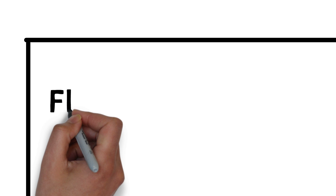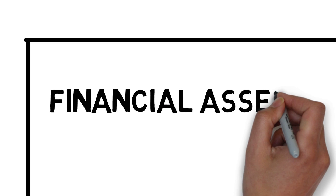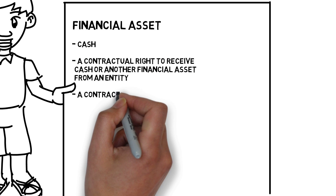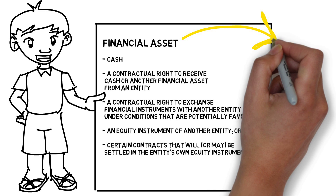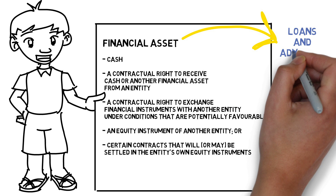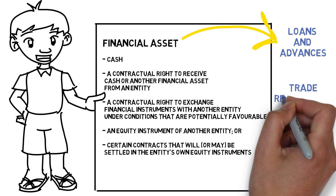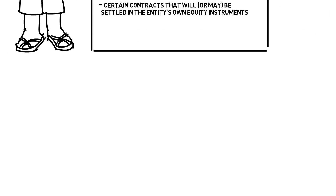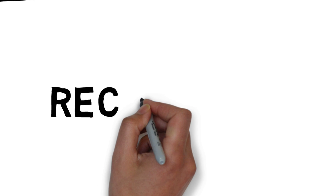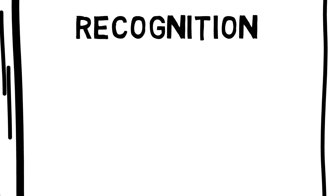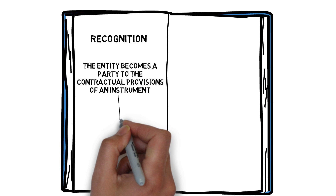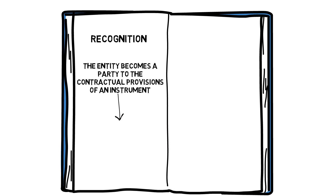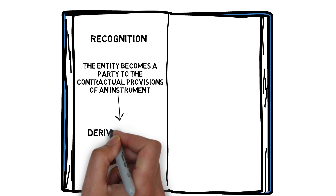Moving on to the area of financial assets. In this video we are going to focus more on two of the financial assets: loans and advances, and trade receivables. A financial asset is recognized in the financials when and only when the entity becomes a party to the contractual provisions of an instrument. As a consequence, all contractual rights or obligations under derivatives must be recognized as assets or liabilities.